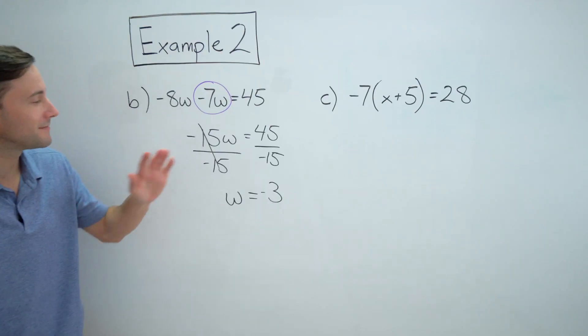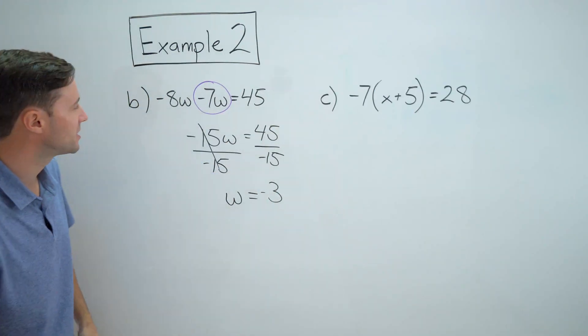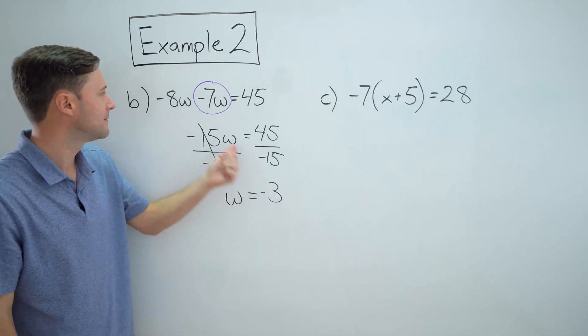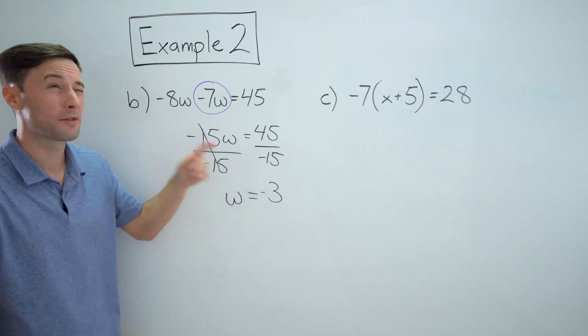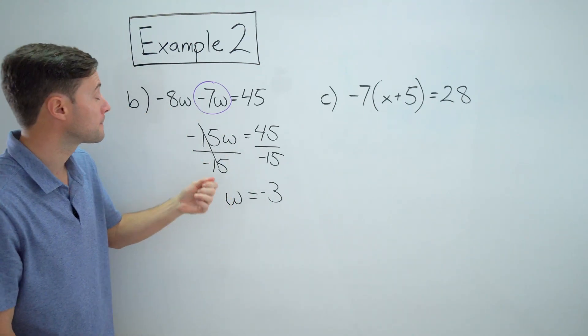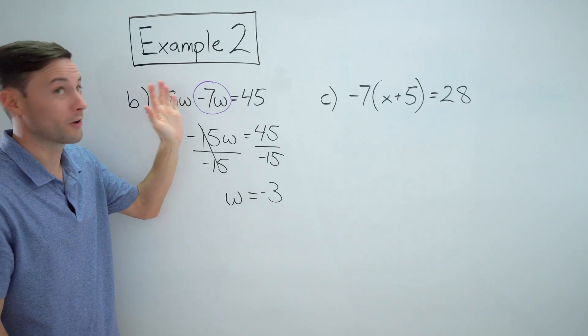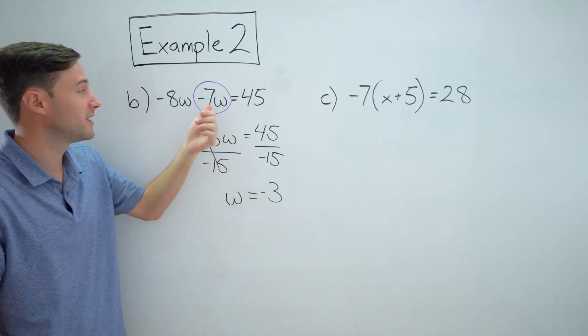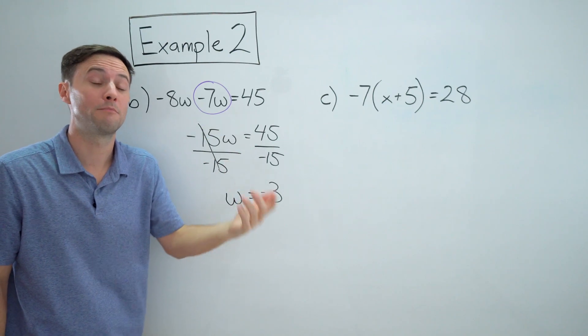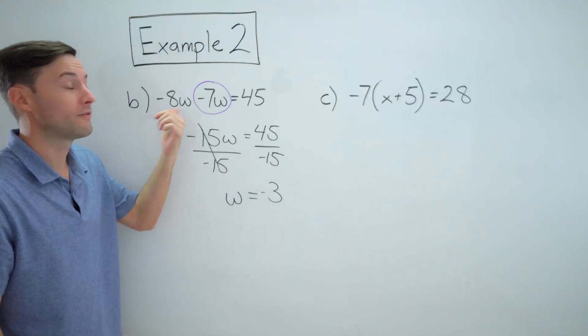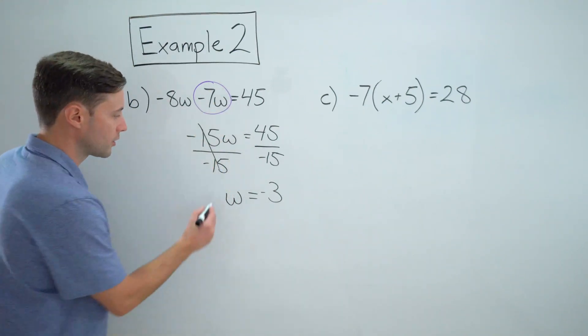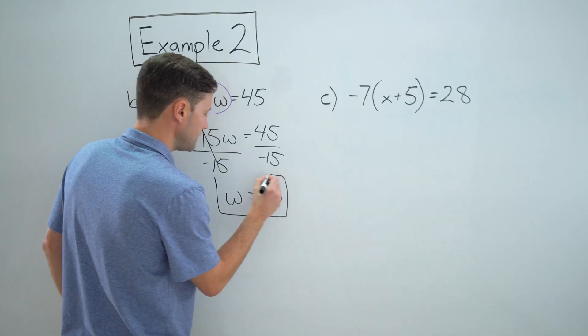And if I want to, I don't have room to write my check. But if I want to do it quickly in my head, negative eight times negative three would give me 24 plus a negative seven times negative three, which is positive 21. 24 plus 21 is 45. So I'm happy with that.